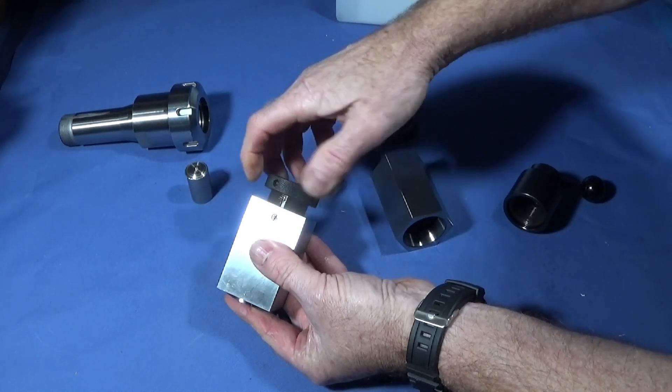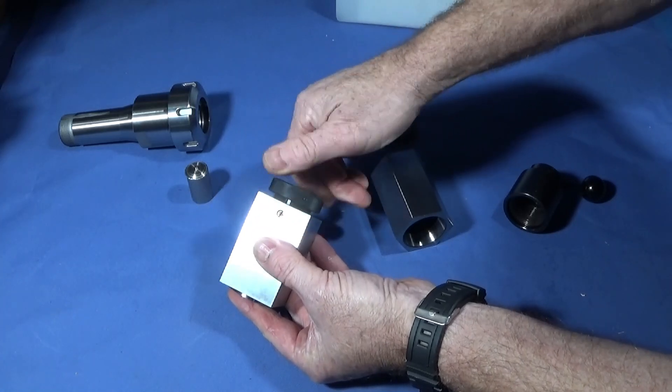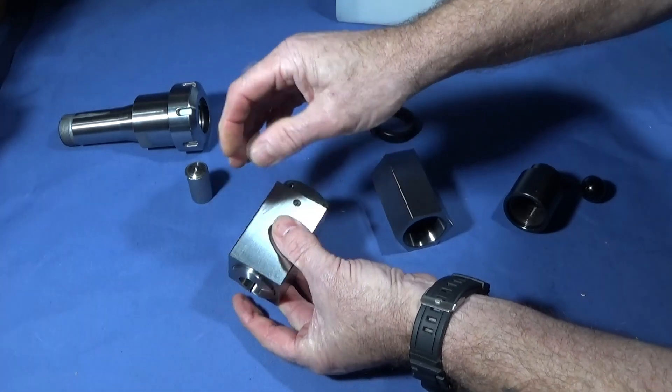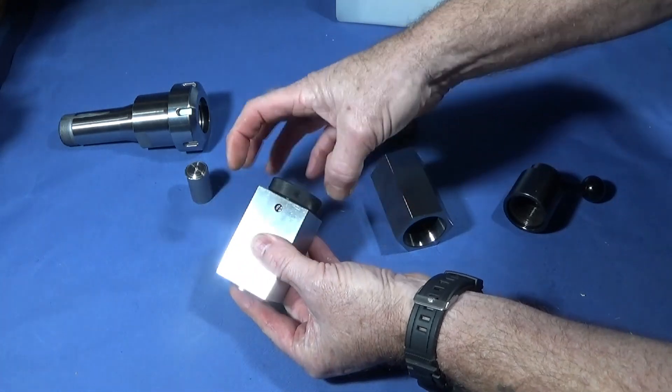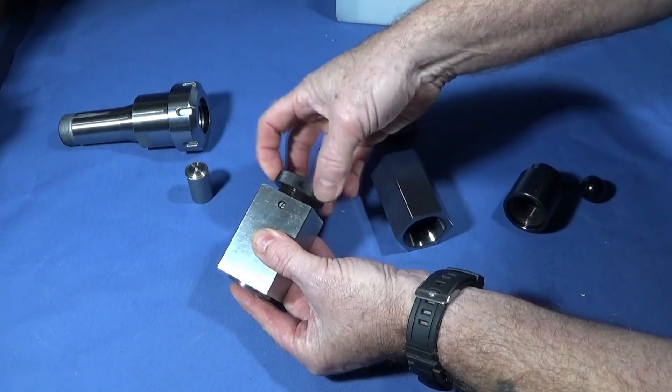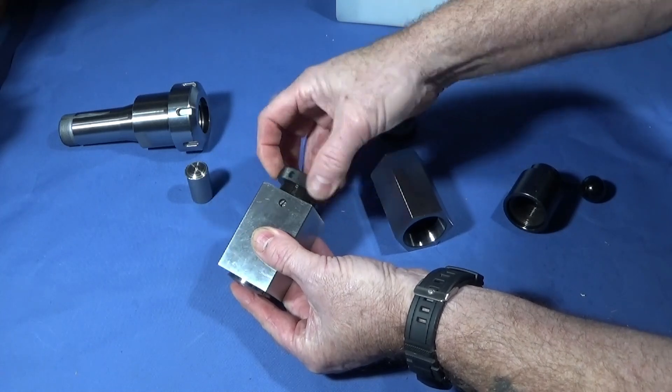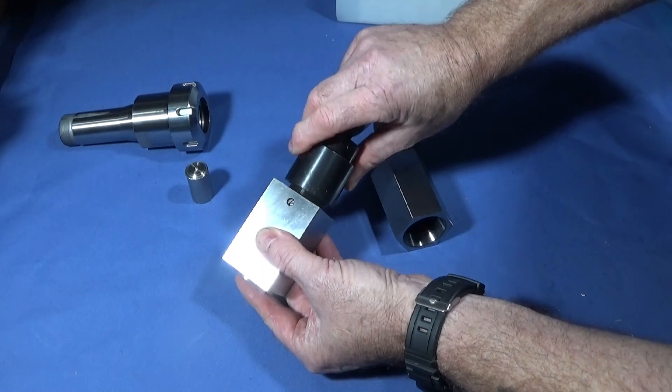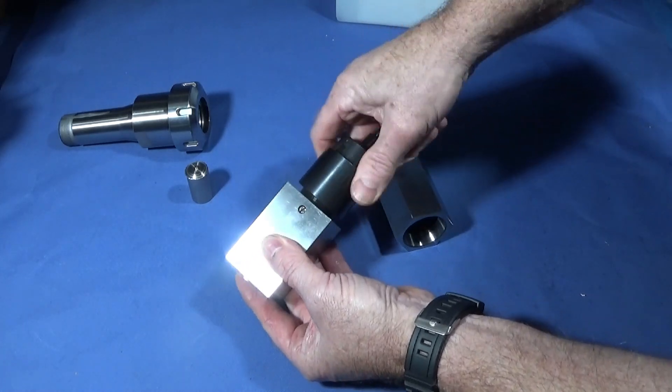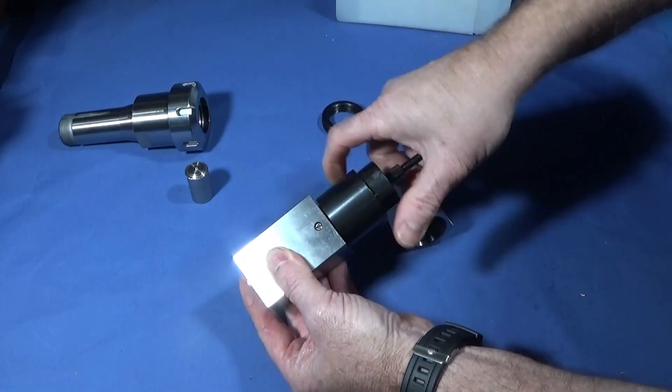You can either use the cam on the back, or you can use one of these collars and screw it up with a C-spanner to pull the collet into the housing and lock up the work. The cam has a quick release mechanism, so you screw that one on the back up to the housing.